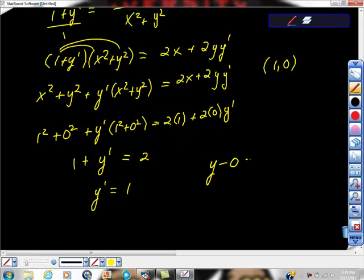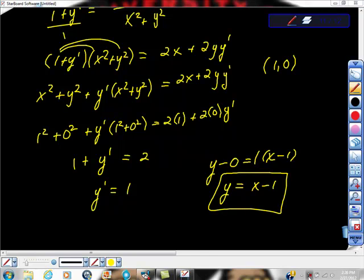From here we really are done, because y minus 0 is equal to 1 (the slope) times x minus 1, and we get out the line tangent to the curve taken implicitly is y = x minus 1. Wow, that was a lot of work. Hope it was helpful.